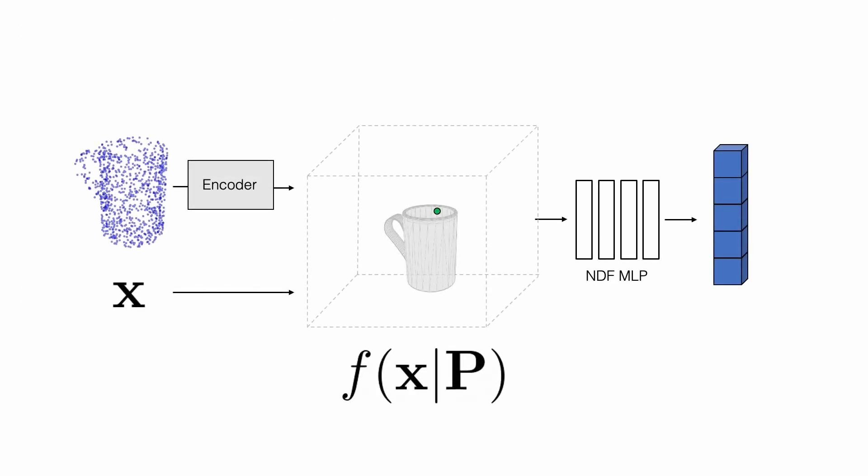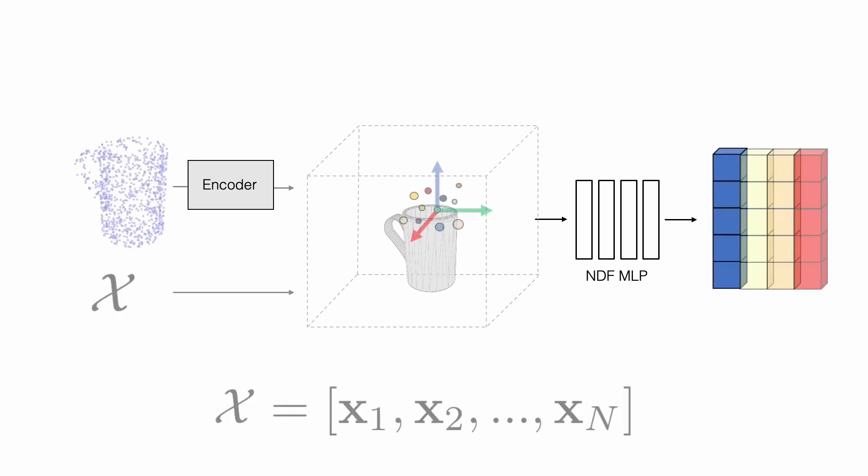However, recall that our initial goal was to encode and correspond local coordinate frames, and not just points. This means we have to go beyond individual point descriptors, since there are multiple frame orientations that all correspond to the same point. To constrain and encode the full SE3 pose of a local coordinate frame, we have to attach more points, and subject them all to move together as a rigid body. We encode the set of query points via concatenation of their individual point descriptors.